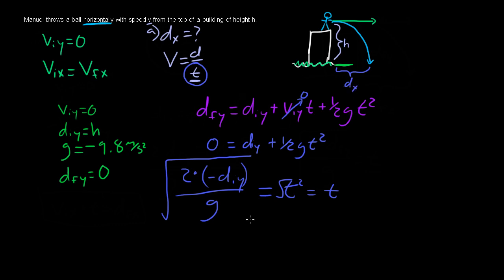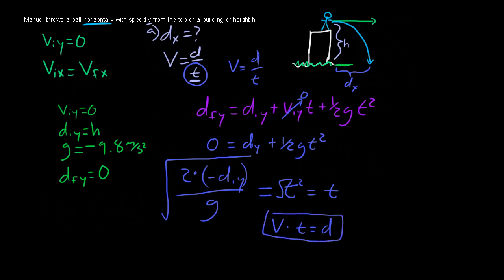For the final part of part A, we already know velocity equals distance over time. Rearranging, velocity times time equals distance. So our final formula is d = v·t, where we plug in the time we found from the y-direction equation.